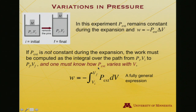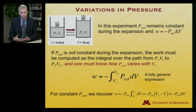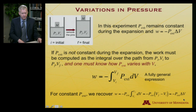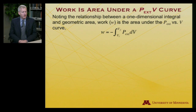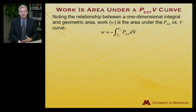Work is minus the integral from the initial volume to the final volume of the external pressure dV. That's completely general — I need to know how P_external varies along the path as volume changes. In the case of constant external pressure, it's consistent with the equation we've looked at before: the constant comes out in front of the integral, giving the integral of dV from Vi to Vf, which is just delta V. Work is the area under a curve defined by P_external with variation in volume.